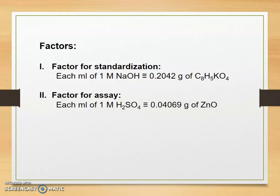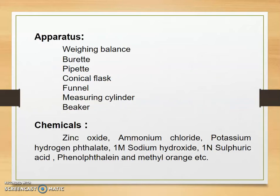Factor for standardization: each ml of 1 molar sodium hydroxide is equivalent to 0.2042 grams of potassium hydrogen phthalate. Factor for assay: each ml of 1 molar H2SO4 is equivalent to 0.04069 grams of zinc oxide. Apparatus required: weighing balance, burette, pipette, conical flask, funnel, measuring cylinder, and beaker. Chemicals required: zinc oxide, ammonium chloride, potassium hydrogen phthalate, 1 molar sodium hydroxide, 1 normal sulfuric acid, phenolphthalein, and methyl orange as indicator.